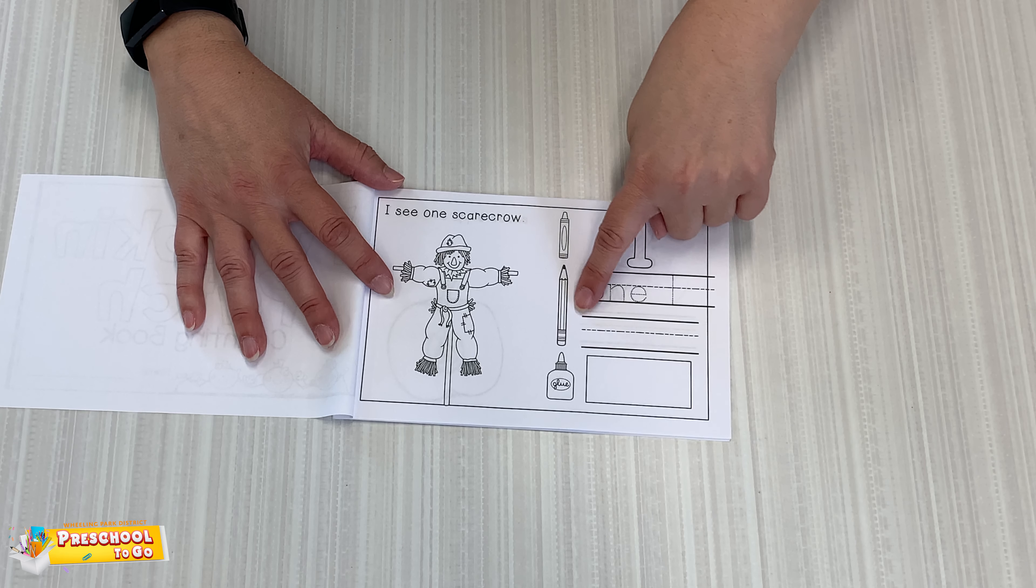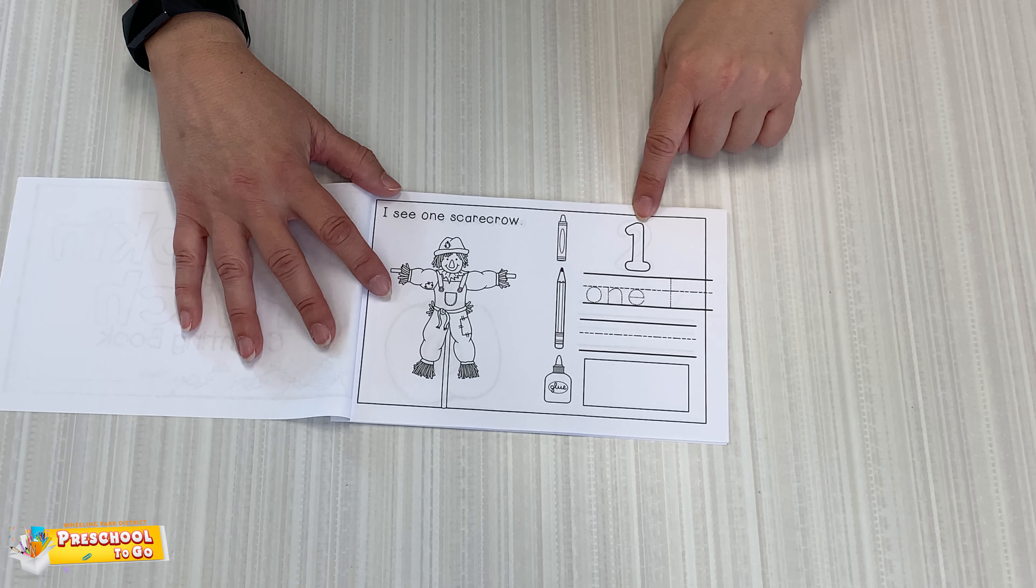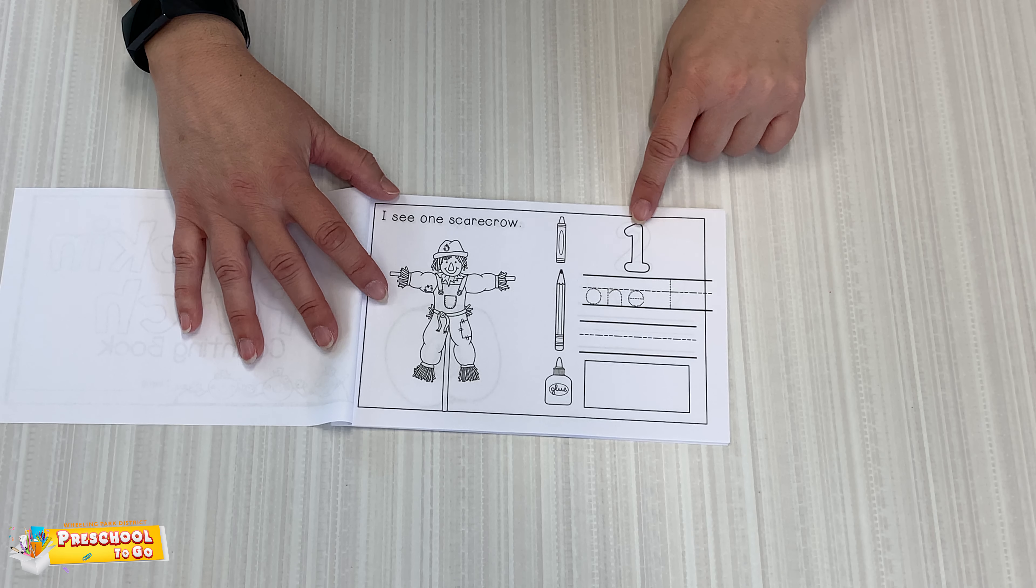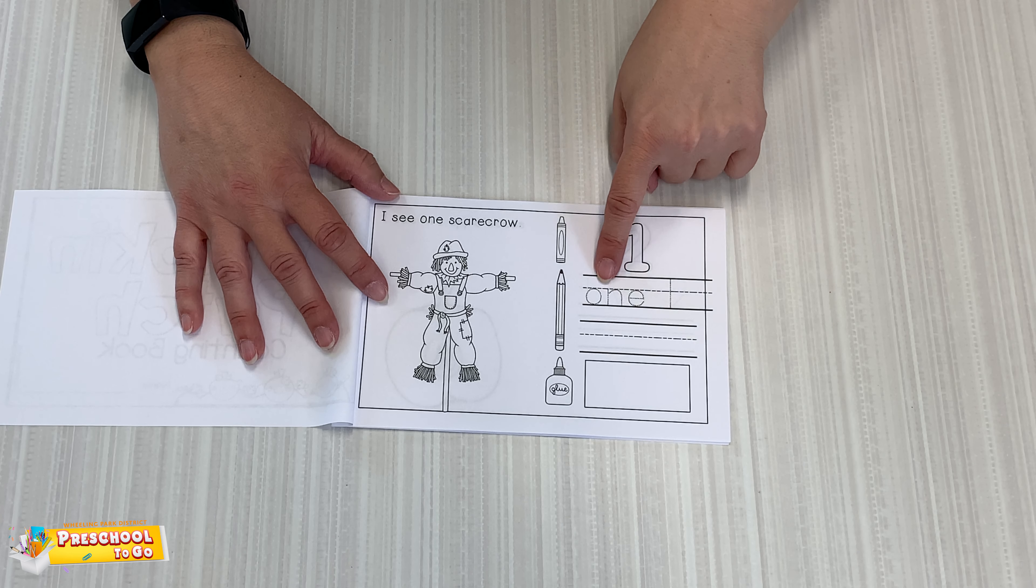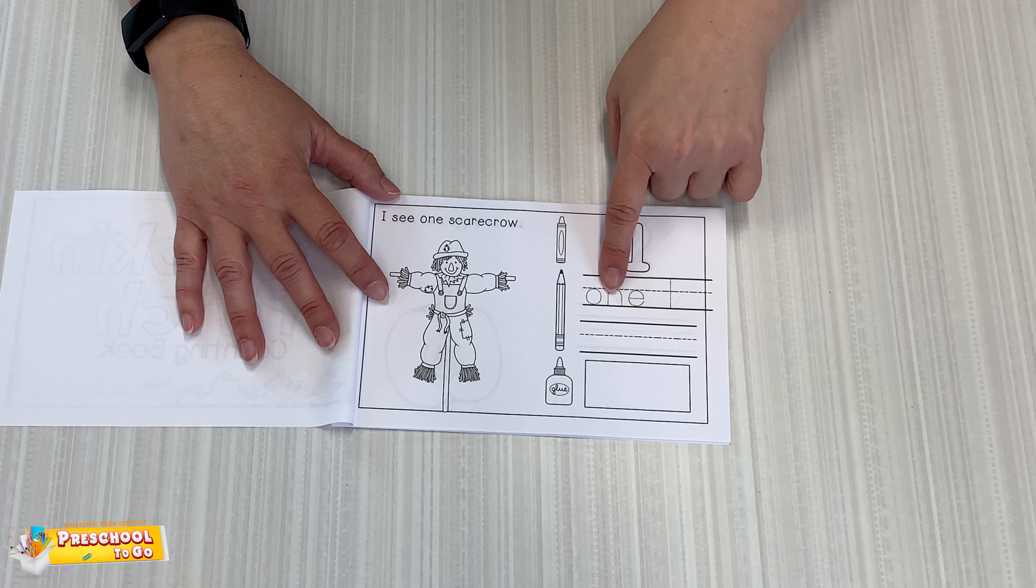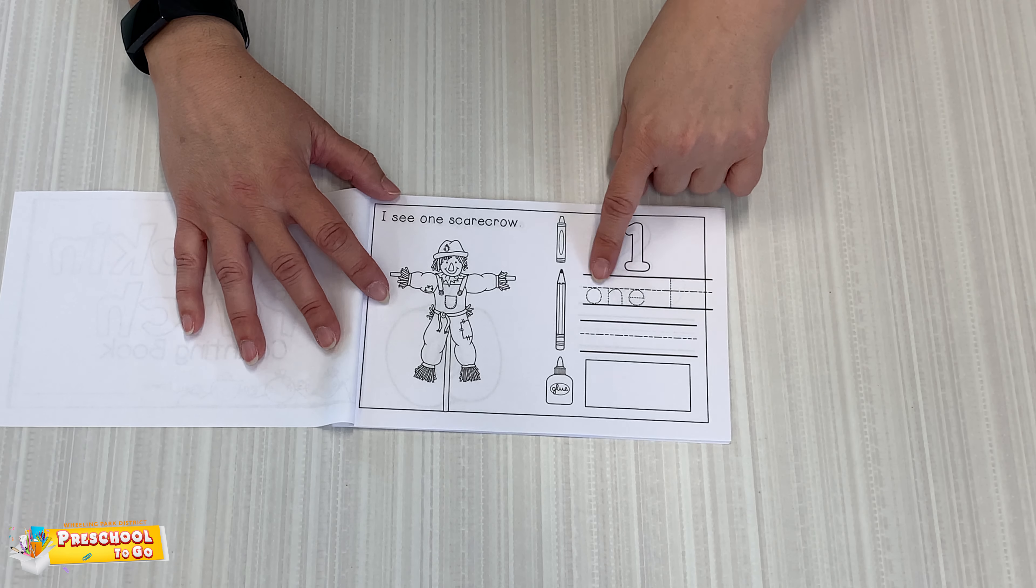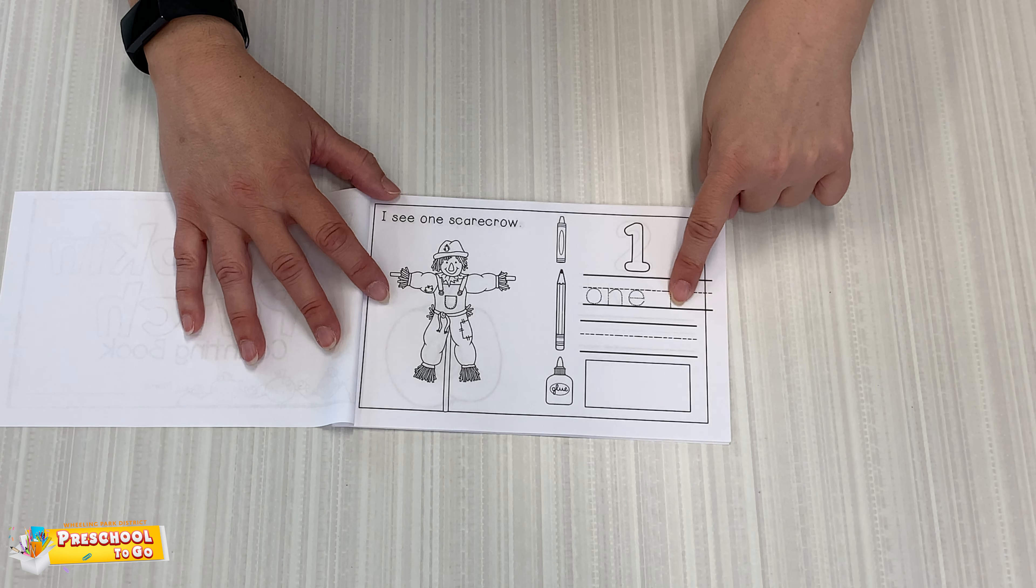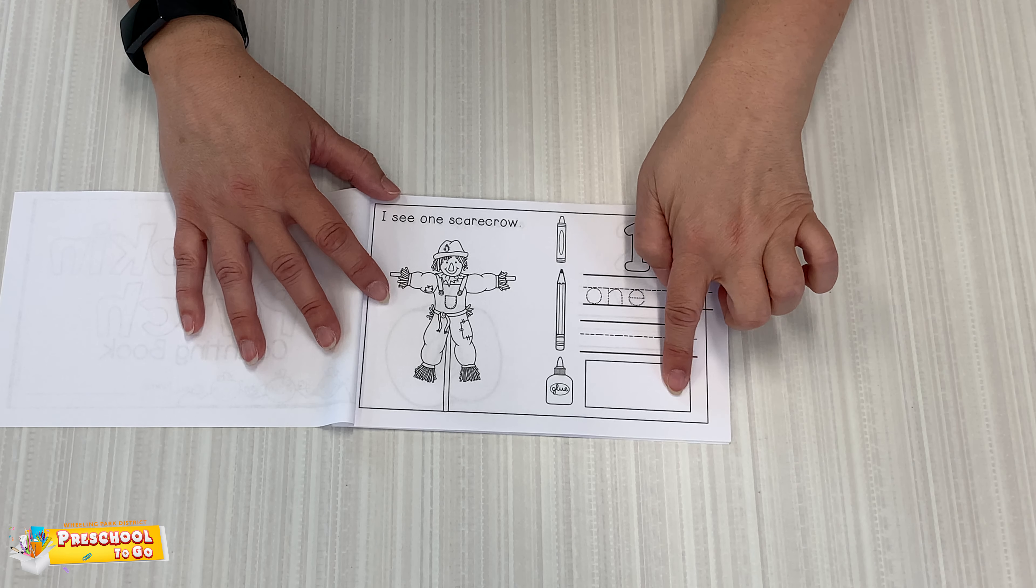There's a crayon, a pencil, and glue. So this is telling you you can color it with a crayon or you can use a marker if you'd like. Use your pencil and trace the number one, writing the word and then the number one. And then glue that number one finger on there.